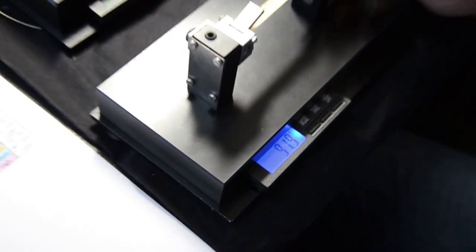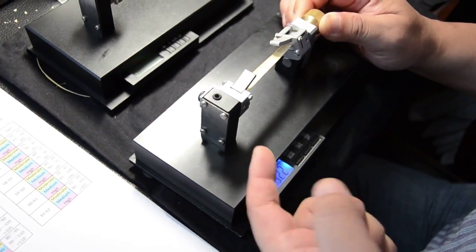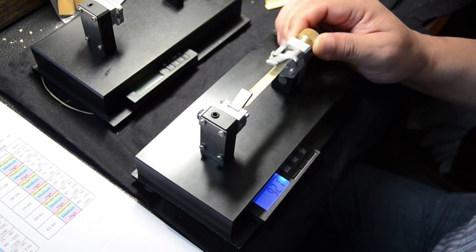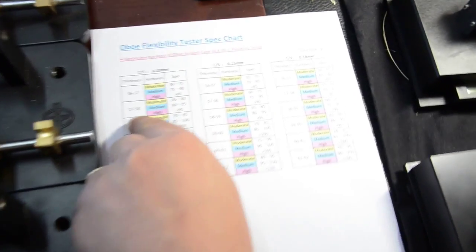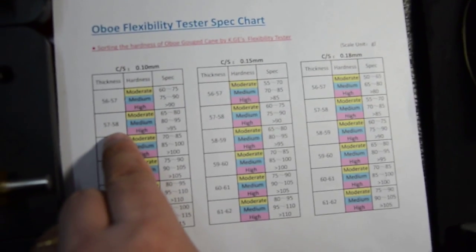Do it again. So it's 91, between 92 to 95. We can see from the chart. This is a piece of cane 57 to 58 in the middle.